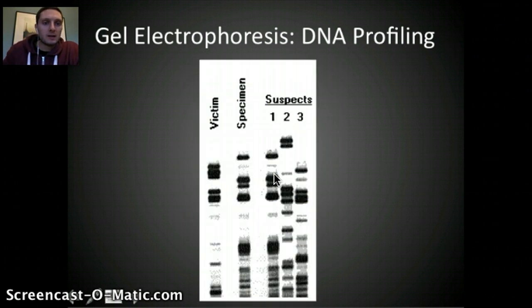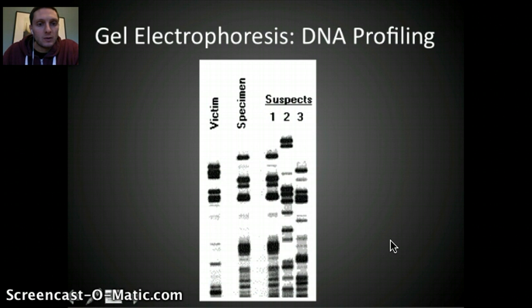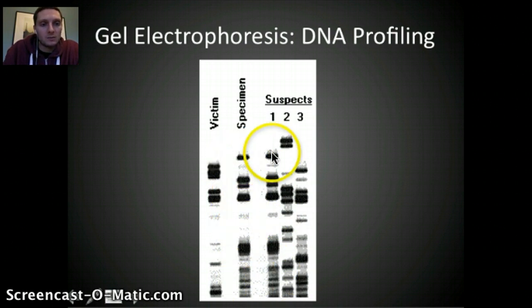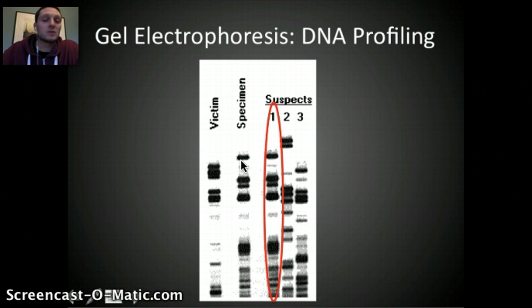Here's one more example. We have a victim, specimen evidence, and three suspects. Go ahead and take a minute to see if you can identify which suspect is most likely involved. Hopefully, even though this image is not quite as clear, you're able to identify that suspect number one has some matching genetic markers compared to our specimen evidence — suspect one and the specimen are pretty closely aligned. This is one of the ways we can use DNA profiling to help identify or eliminate those that are not guilty based on this evidence.